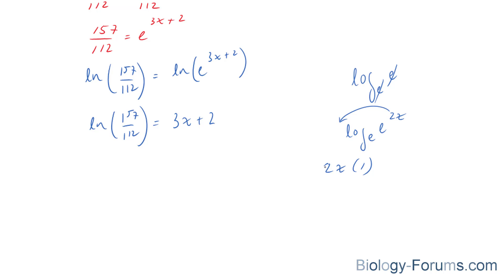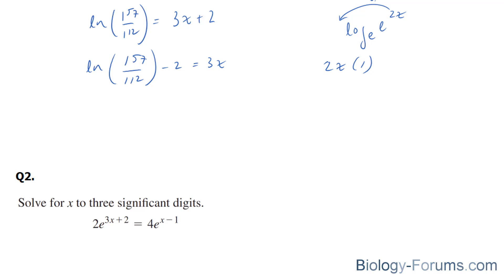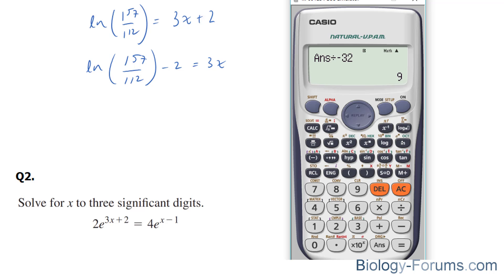So to solve for x here, we would bring the positive 2 over. It becomes negative, and we would use our calculator now. ln of 157 over 112 minus 2.